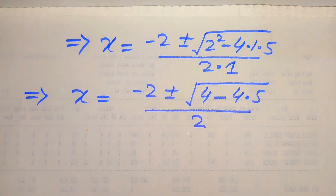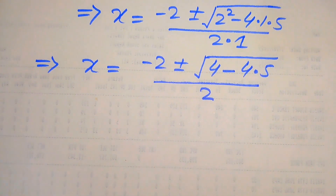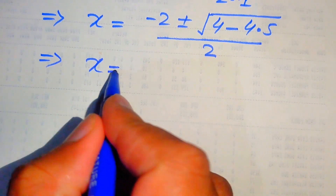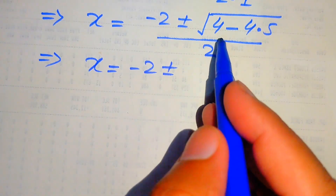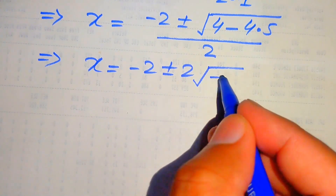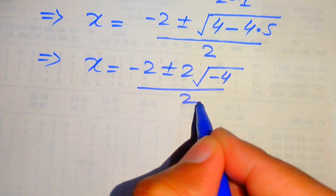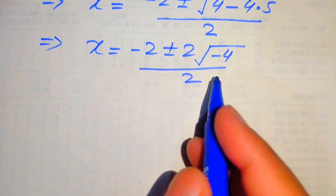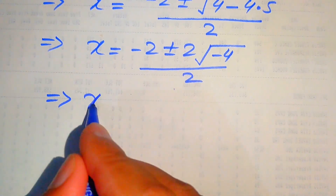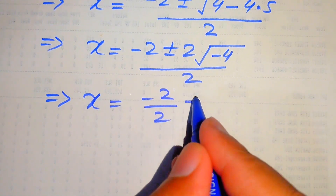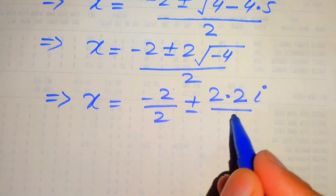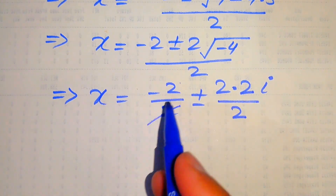Simplifying further, we take 4 common inside the square root: x equals (minus 2 ± √(4 · (1 minus 5))) over 2, which gives (minus 2 ± √(4 · (minus 4))) over 2. Since √4 equals 2 and √(minus 1) equals i, this becomes (minus 2 ± 2i√4) over 2, and the 2 in the numerator and denominator cancel.